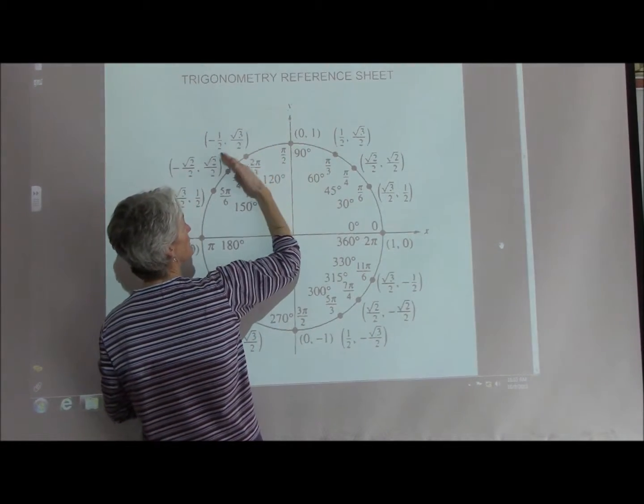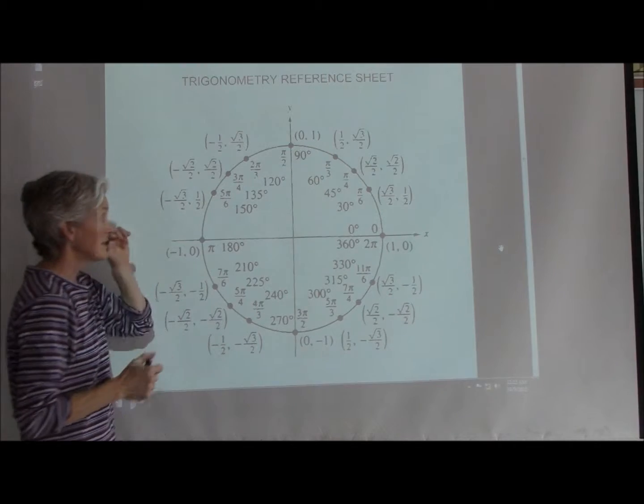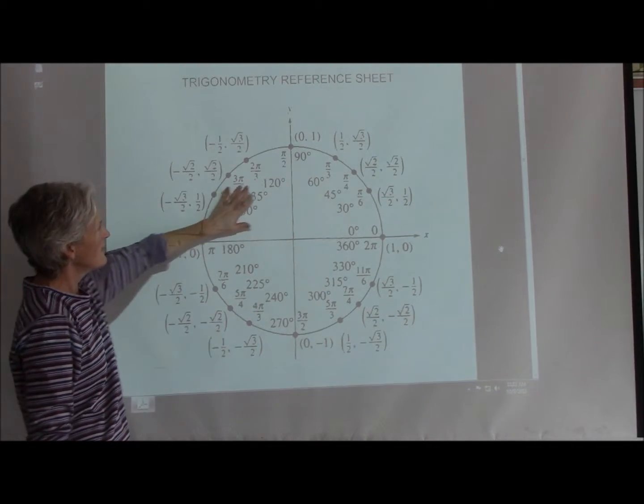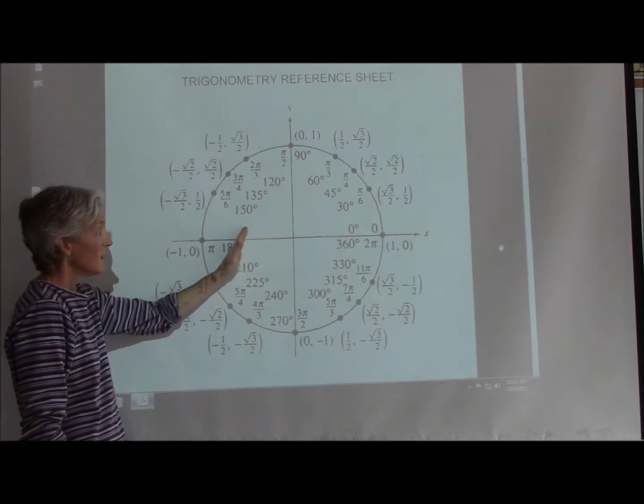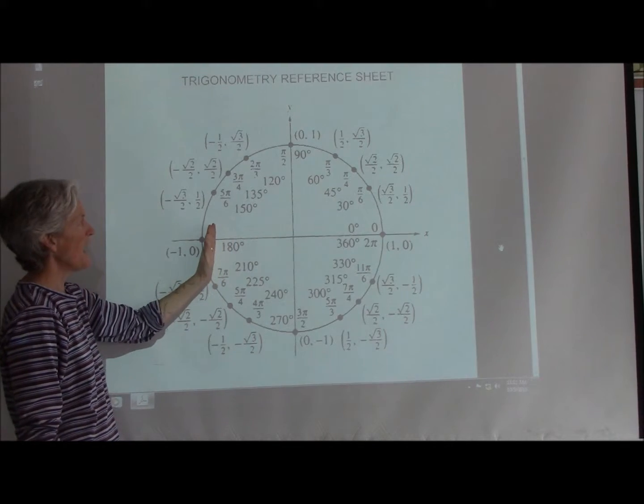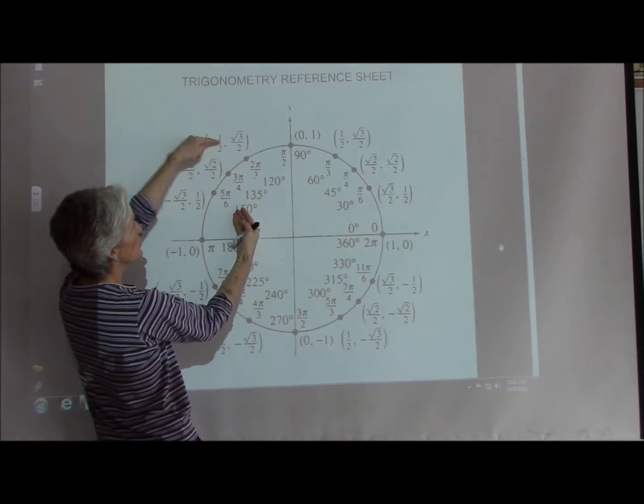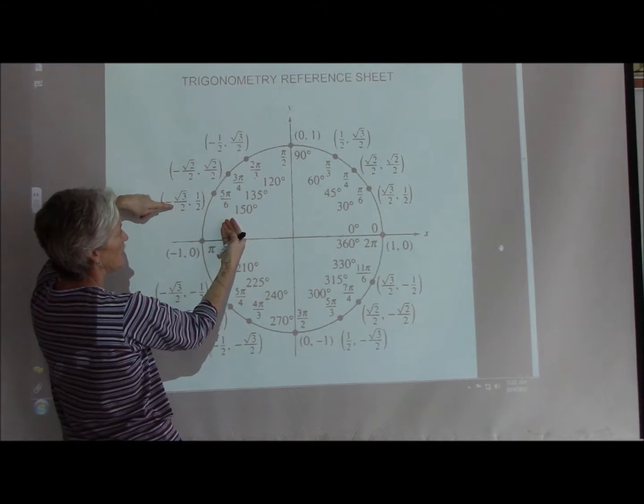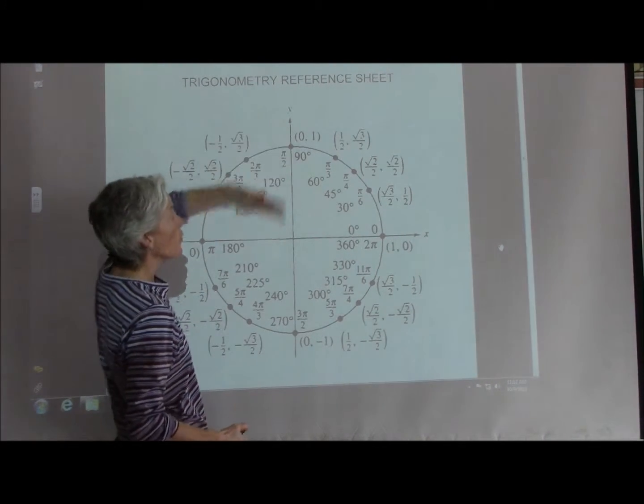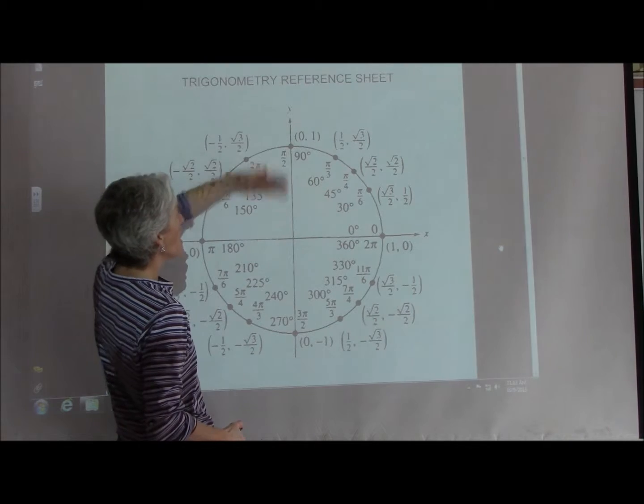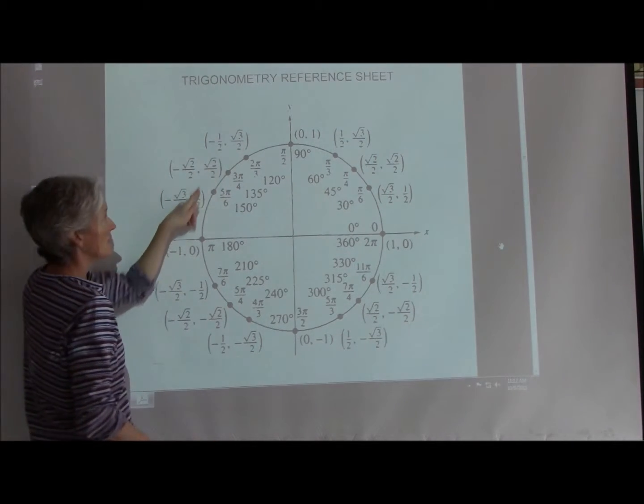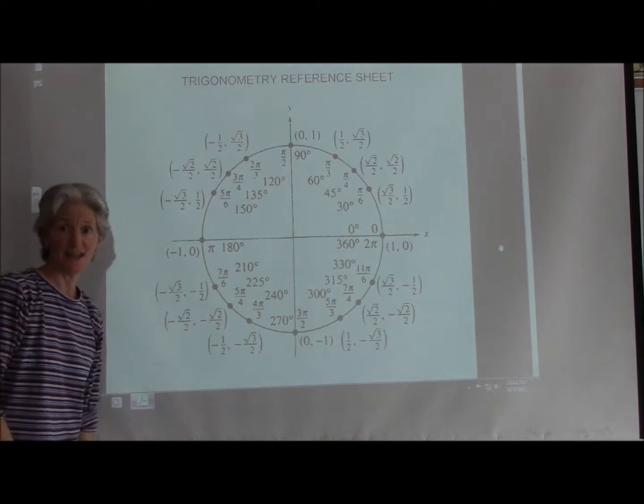Once we get into the other quadrants, of course, you see the positives and the negatives. So over in the second quadrant, cosine is associated with x. So, of course, all your x's down here are negative, so all of your cosine ratios will be negative. My sines are y's, so all of the sines will be positive since I'm in positive y land.